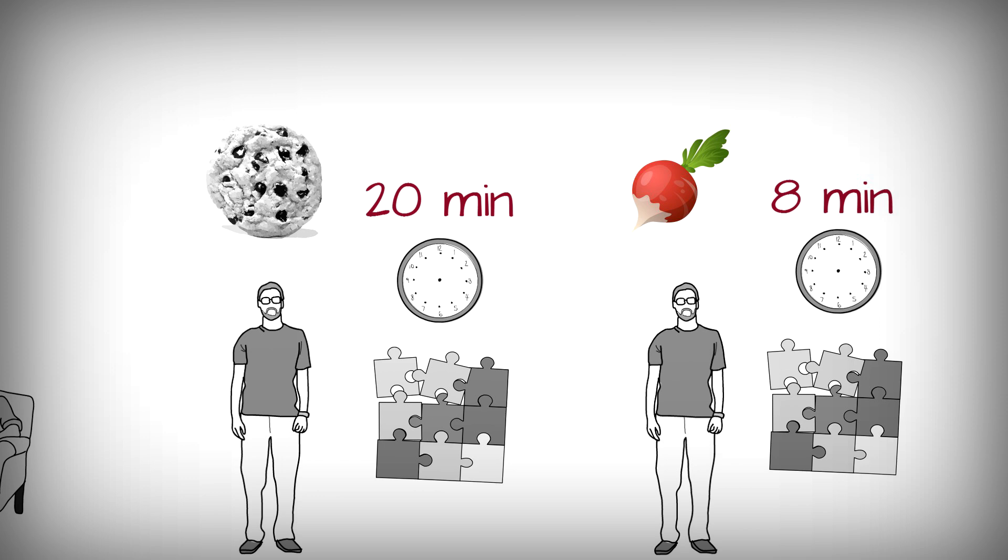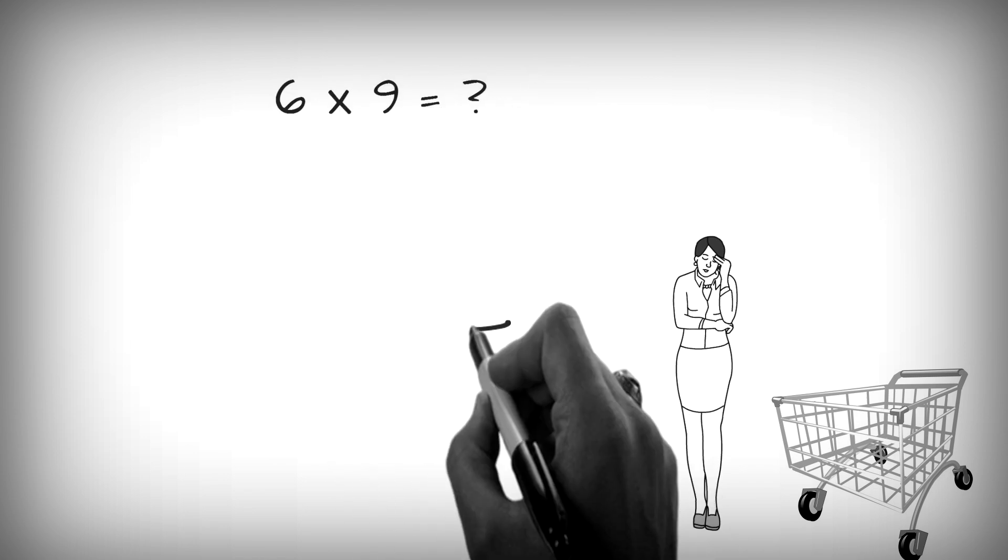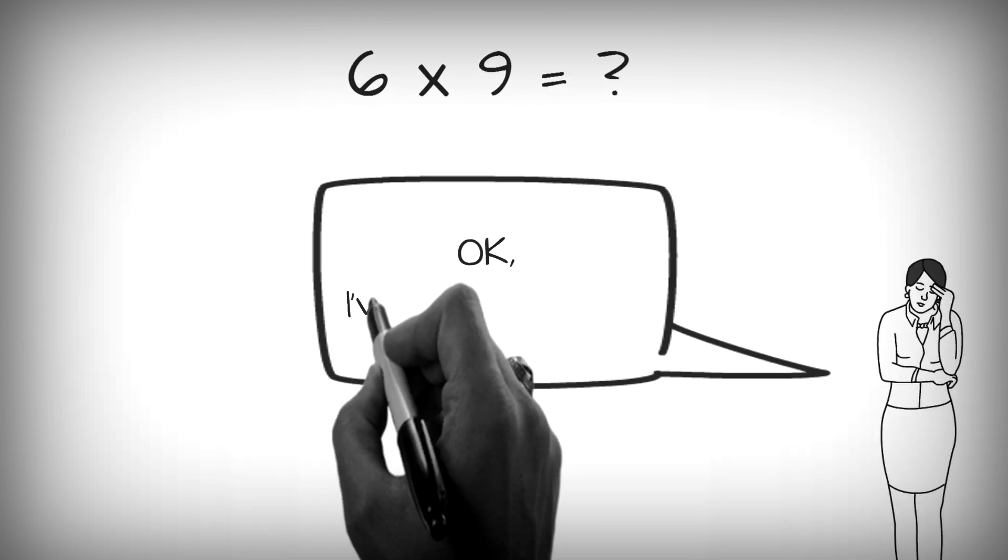And these sorts of experiments have been replicated over and over again. Turns out, if you walk into a mall and give people simple math problems to solve, the ones who've been shopping for much longer will give up on the problems much faster.